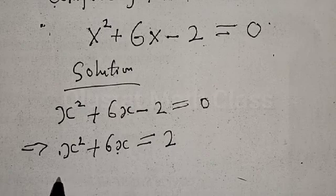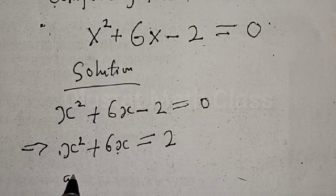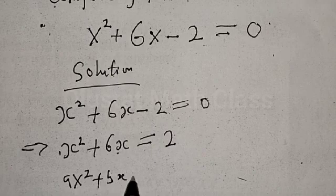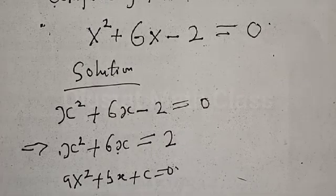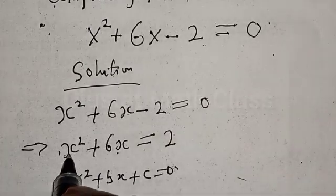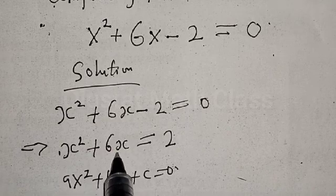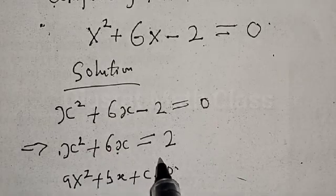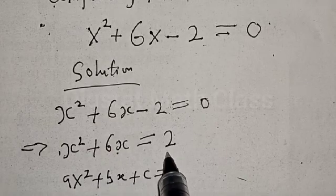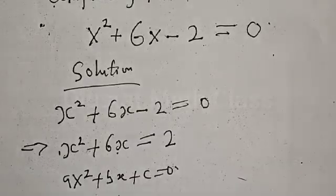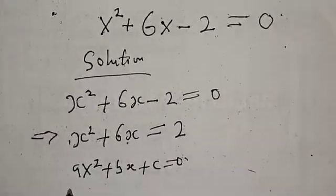We know that the standard form is x squared plus bx plus c is equal to 0. Here, the coefficient of x squared is 1 and the coefficient of x is 6, while the constant is 2.